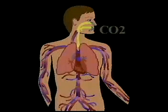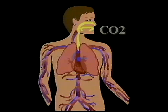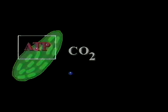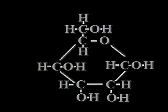In animals, including human beings, the carbon dioxide will pass out of the cell and eventually out of the body. But in our imaginary plant cell, this carbon dioxide may be used again in photosynthesis to form more glucose.